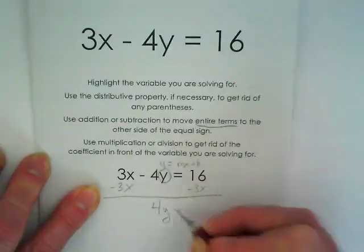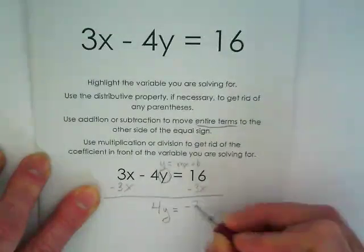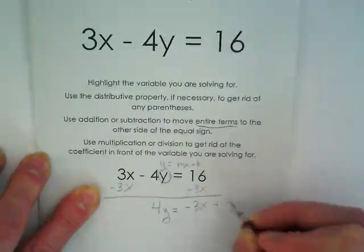That leaves us with 4y on the left side of the equal sign. 4y on the left side of the equal sign is equal to negative 3x plus 16.